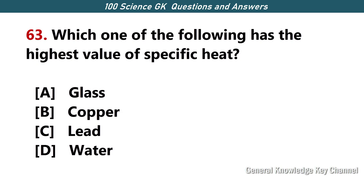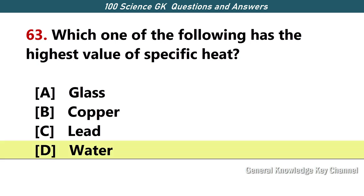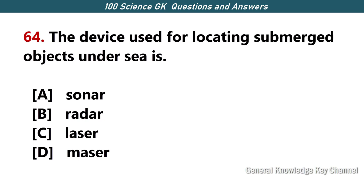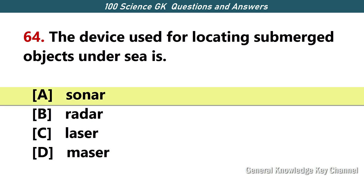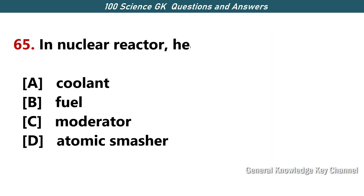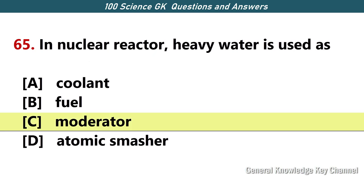Which one of the following has the highest value of specific heat? Answer D — water. The device used for locating submerged objects under sea is — Answer A — sonar. In a nuclear reactor, heavy water is used as — Answer C — moderator.